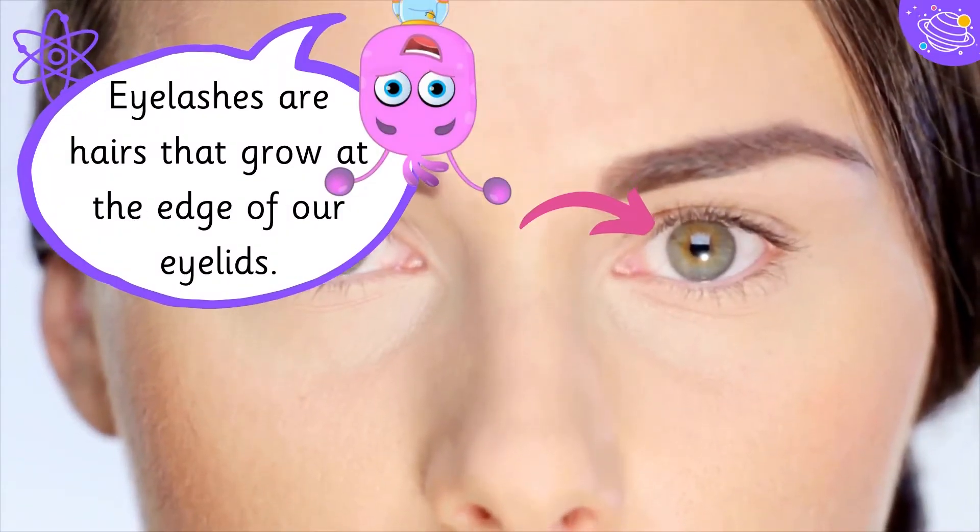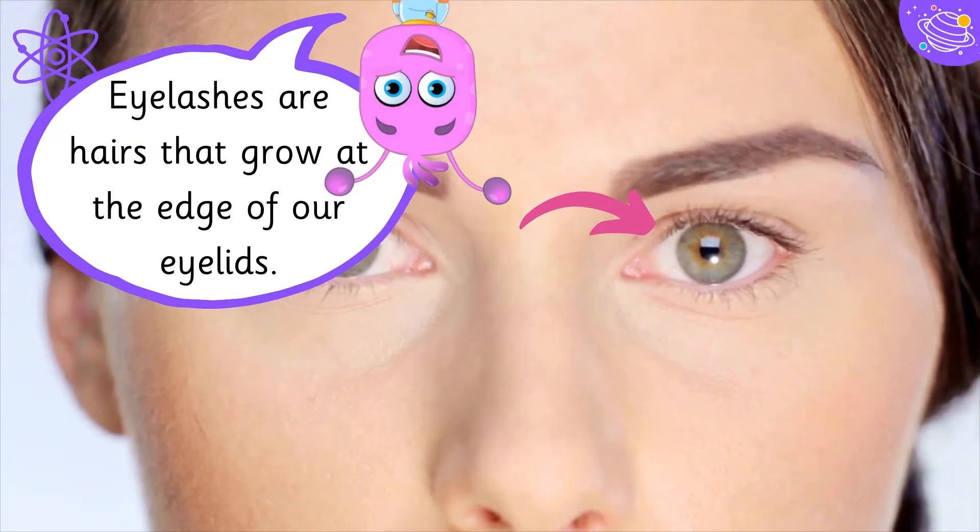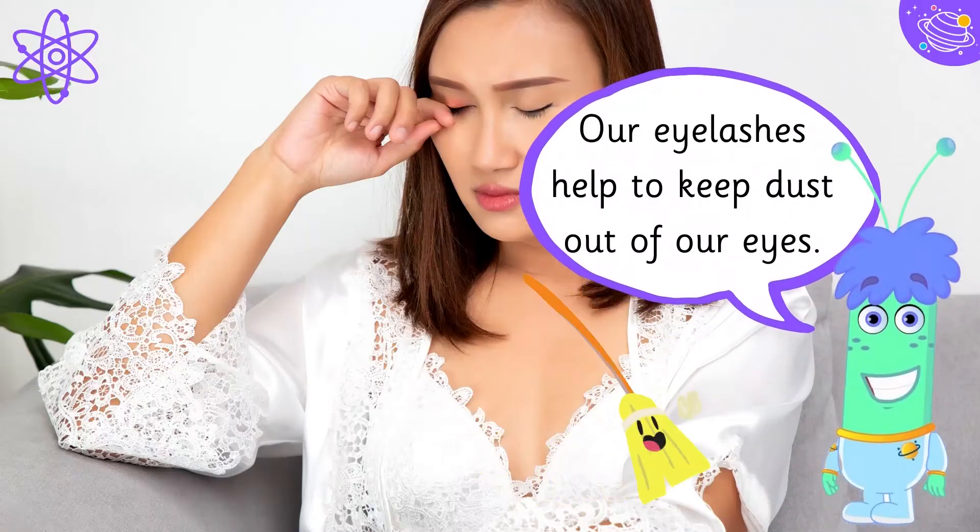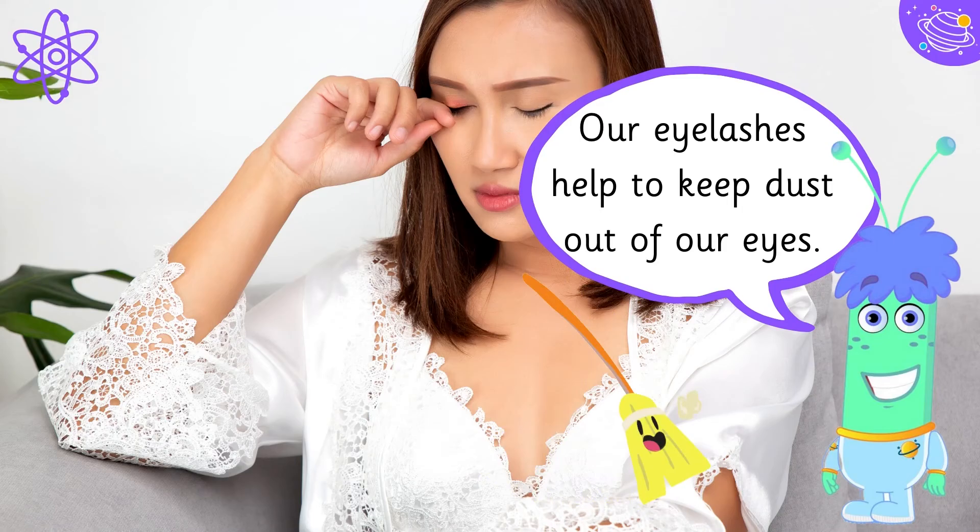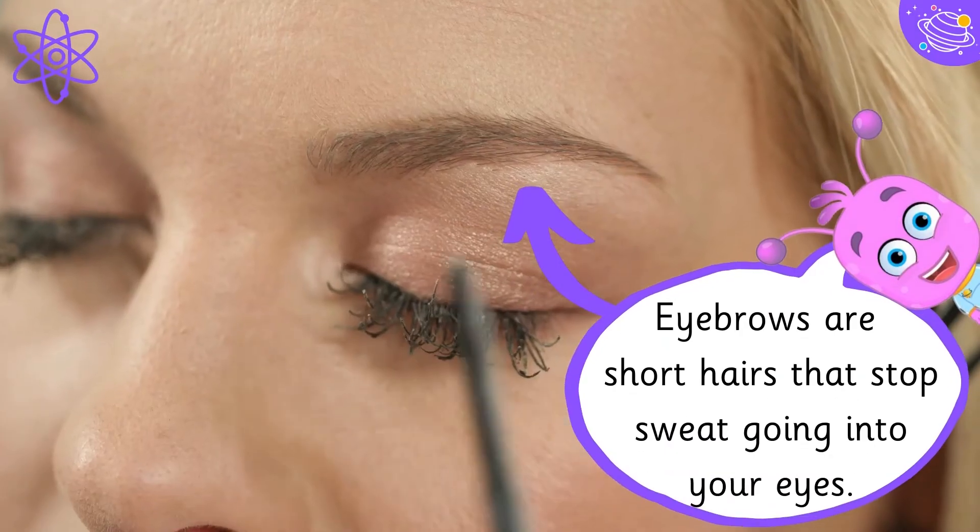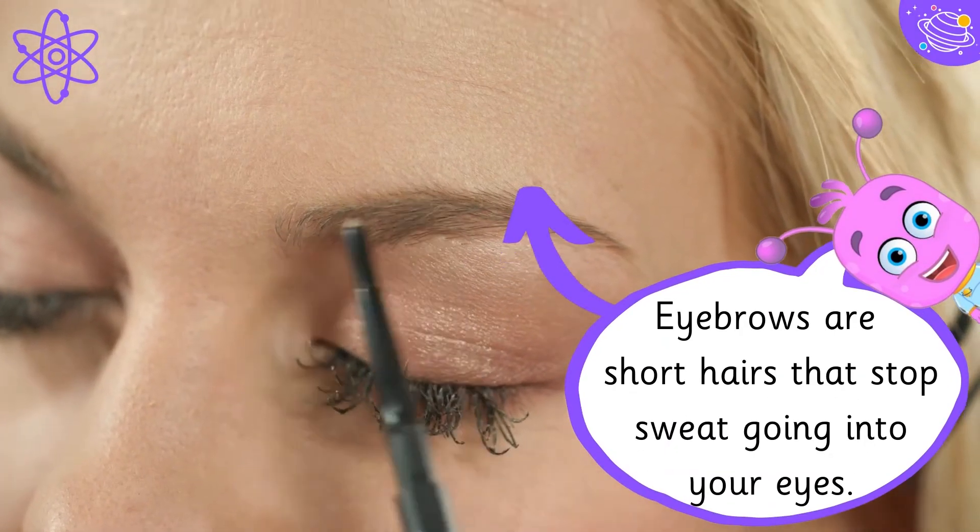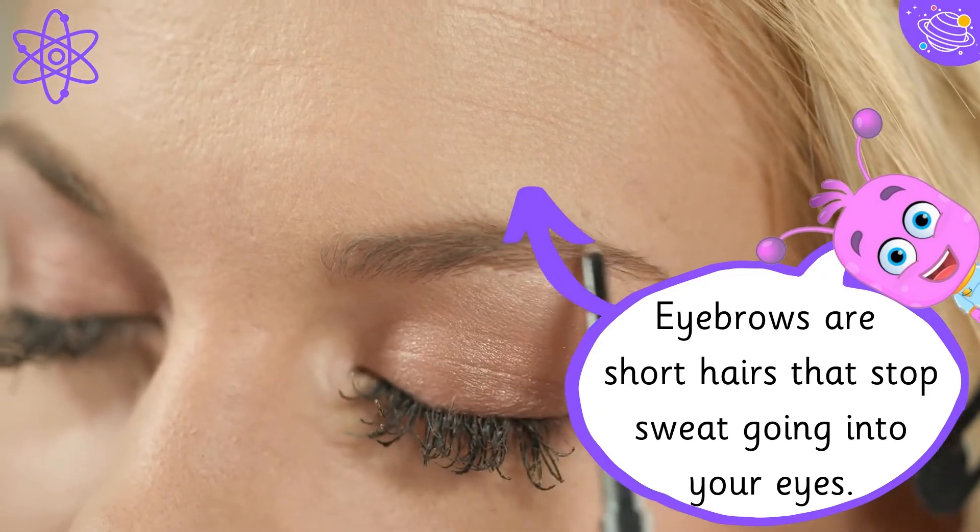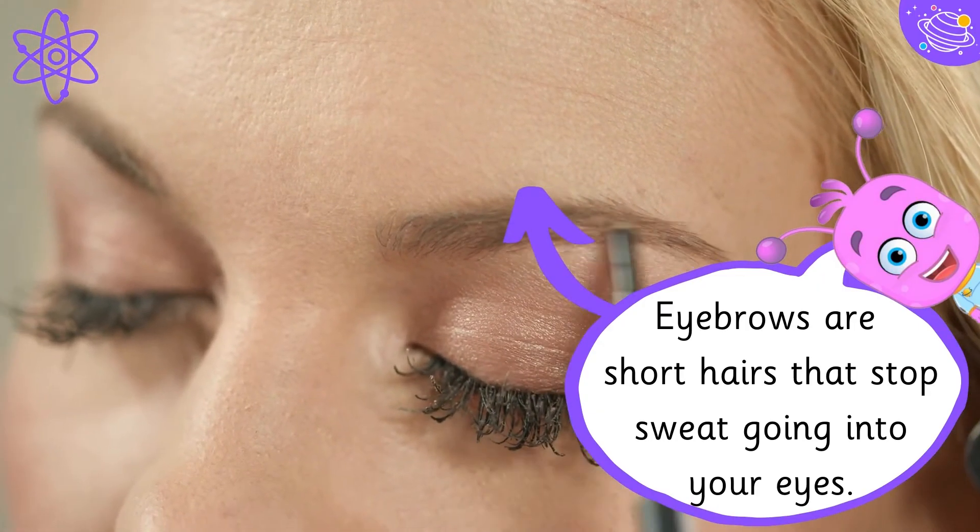Eyelashes are hairs that grow at the edge of our eyelids. Our eyelashes help to keep dust out of our eyes. Eyebrows are short hairs that stop sweat going into your eyes.